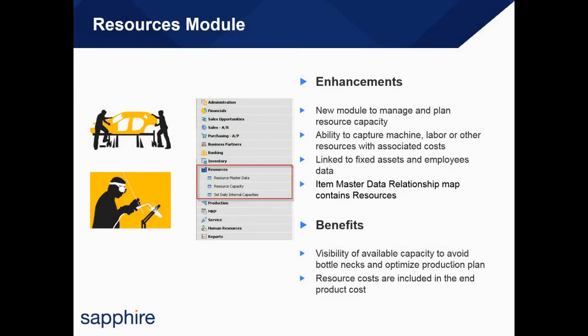Back to our presentation - we have a new resources module in SAP Business One 9.1, where we have the ability to manage and plan our resource capacities. We can apply this to capture machine, labour and other resources associated with costs. We can link to fixed assets and employee master data, and the item master data relationship map contains resources too. The benefits are visibility of available capacity to avoid bottlenecks, optimise the production plan, and resource costs are included in the end product cost.